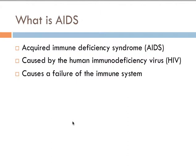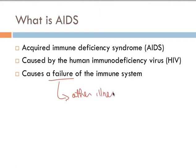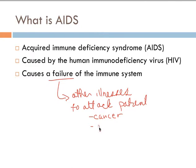Moving into the discussion on AIDS: what is AIDS? AIDS stands for Acquired Immune Deficiency Syndrome, and it is caused by the human immunodeficiency virus, also known as HIV. This causes a failure of the immune system, and once that failure happens, it allows other illnesses such as cancer or pneumonia to attack the patient. It is actually these other illnesses that end up killing the patient.